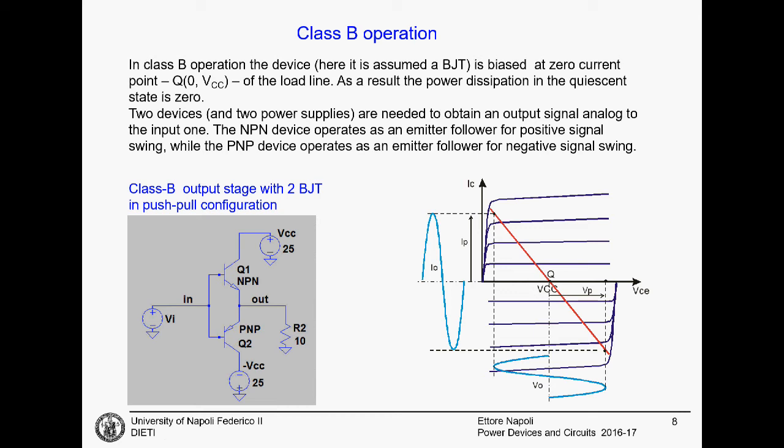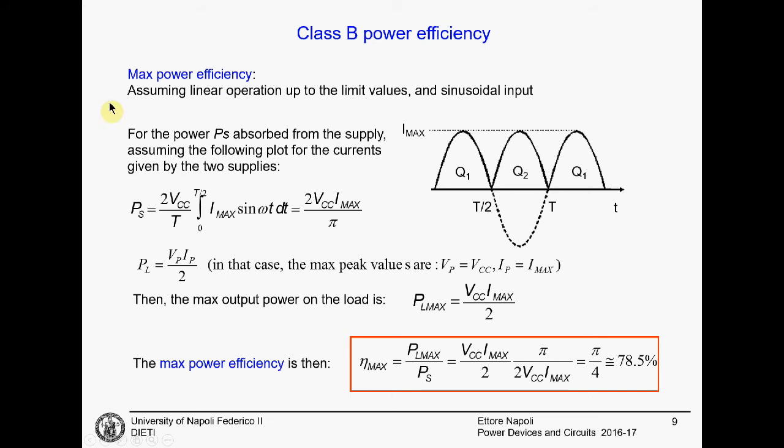If you have 5 volts of supply voltage, this is important. Your output sinusoid will have a lot of nonlinearities. But for a 25 volts application, this is less important. However, let us assume a linear operation up to the limit values and a sinusoidal input. The current plot will be sinusoidal for the NPN transistor and then sinusoidal for the PNP transistor, up to a maximum current.